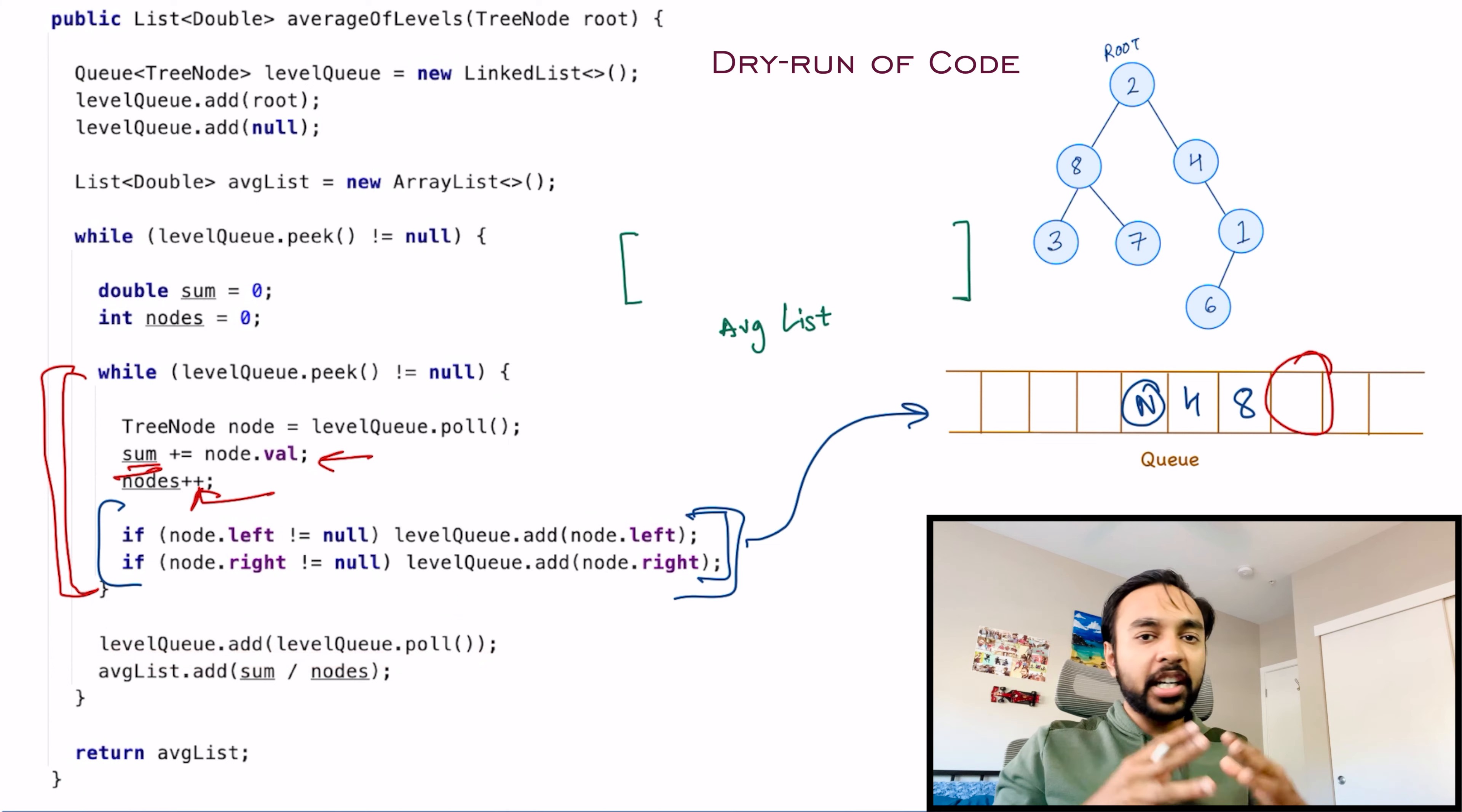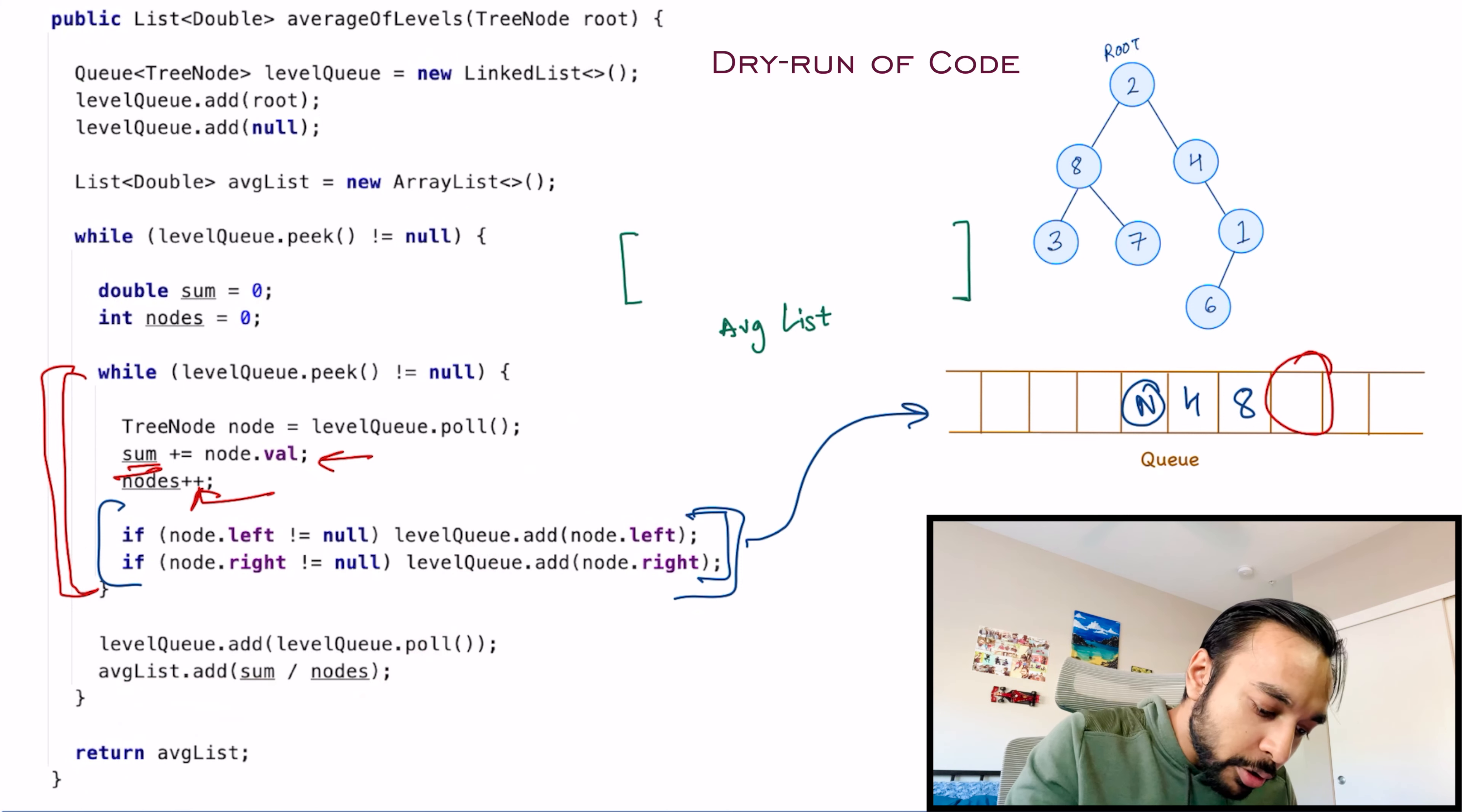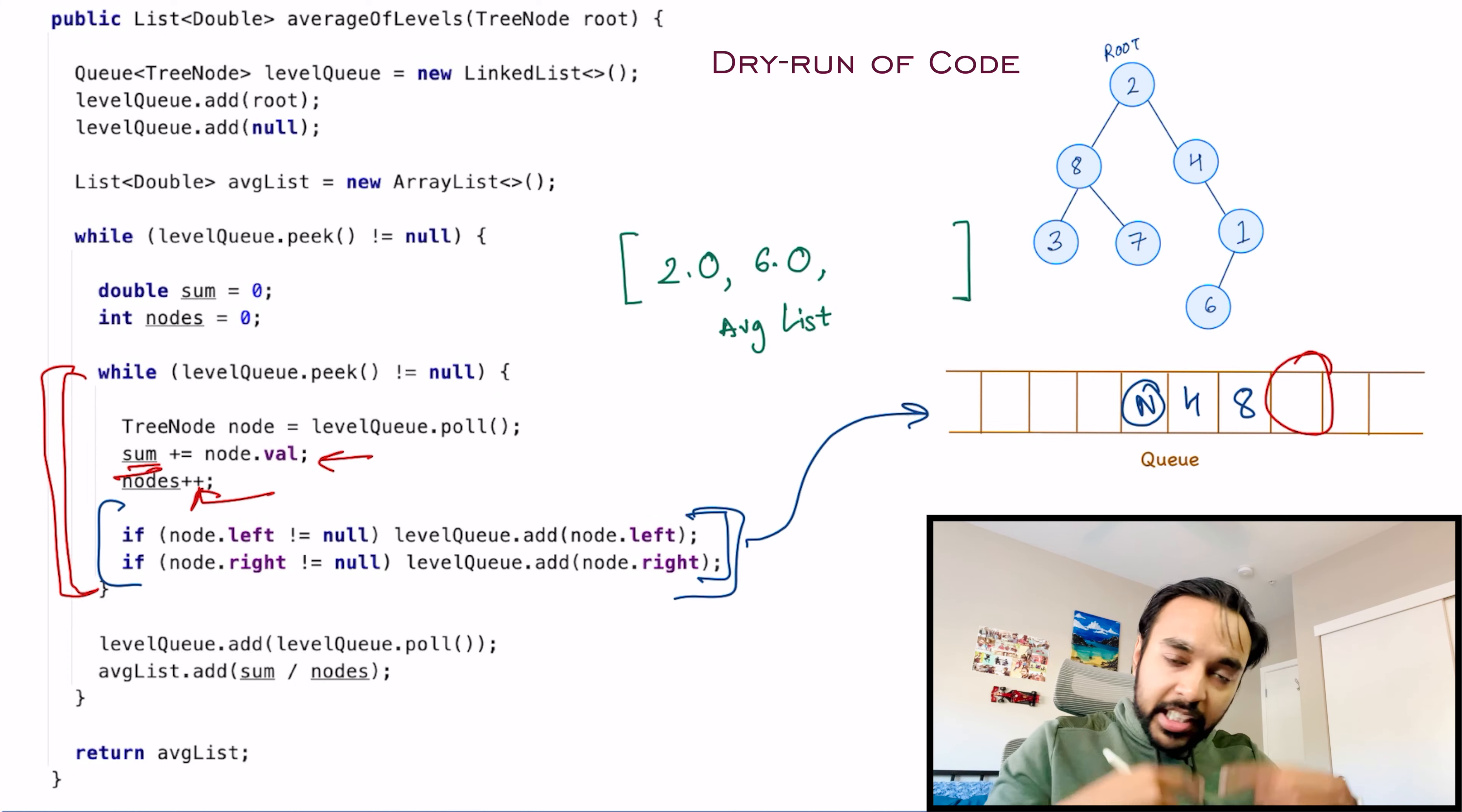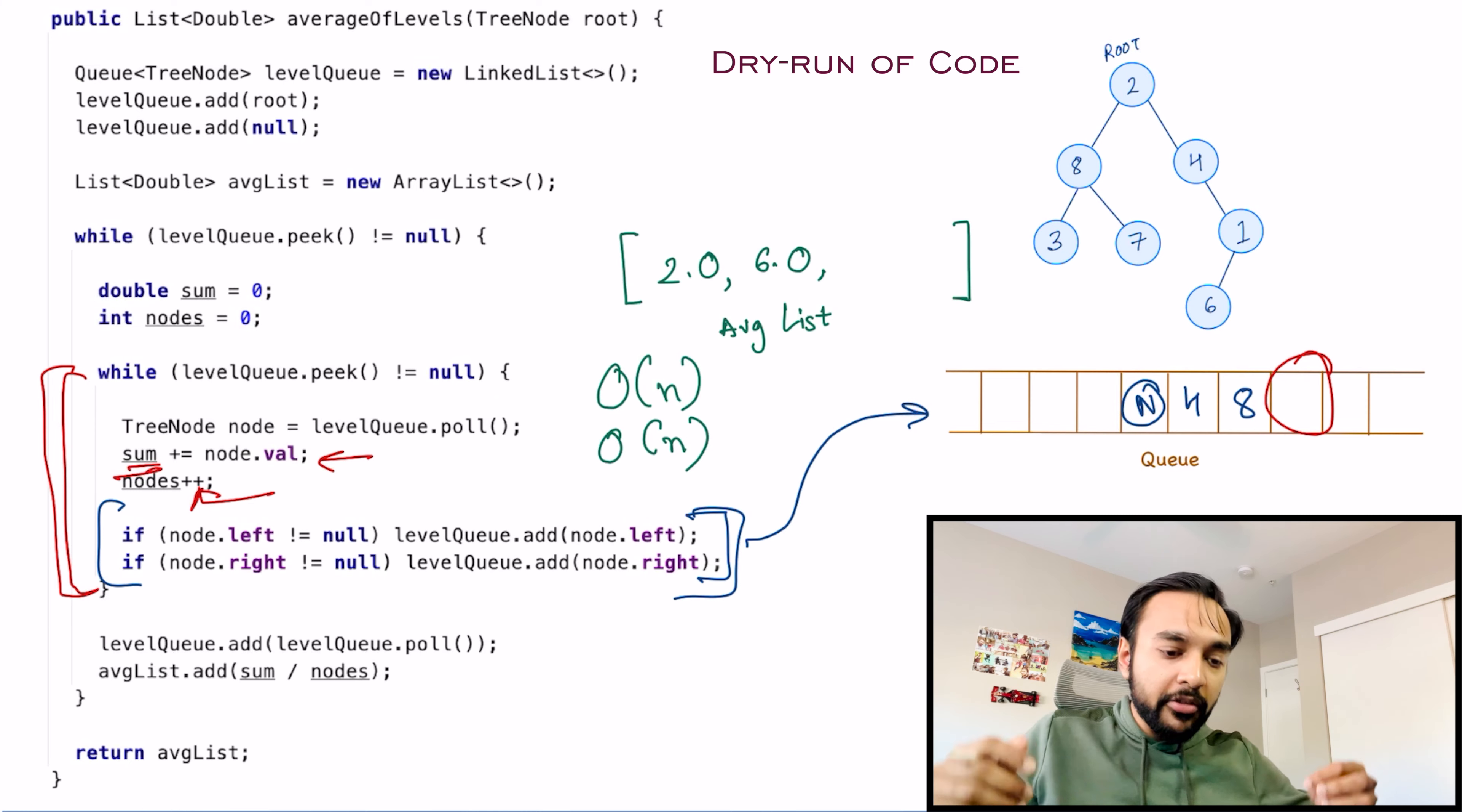Once I have done this, I know that I have completed a level. So I will just add whatever the average is to my average list. So for our first case, since the only element present is two, so I will add 2.0 to my list. This loop will run again, and this time I will be processing four and eight. So I know that 6.0 will get added in my average list. This will continue to happen and at the end, we will return this average list as an answer. The time complexity of this solution is order of n, where n is the total number of nodes in the binary tree. And the space complexity of this solution is also order of n. That is because we need to maintain a queue where we are storing all of our nodes. So this queue can be as large as the total number of nodes in your binary tree.